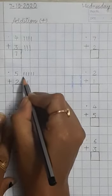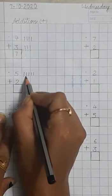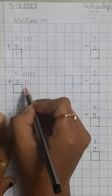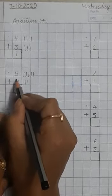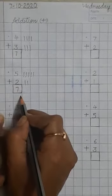Now count them all together. 1, 2, 3, 4, 5, 6, 7. 5 plus 2 is equal to 7.